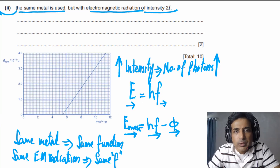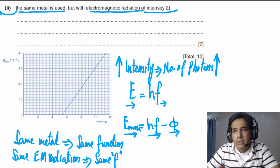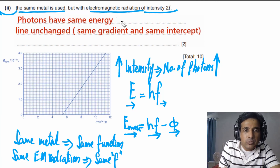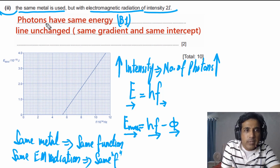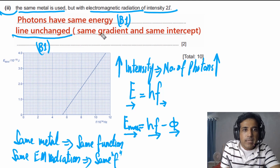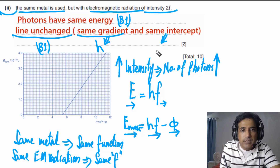In your final answer, mention two points: first, the photons have the same energy (P mark); second, the line is unchanged (P mark). The line is unchanged because the gradient equals Planck's constant, which is constant, and the y-intercept does not change because it is the same metal with the same work function and the same electromagnetic radiation with the same frequency.